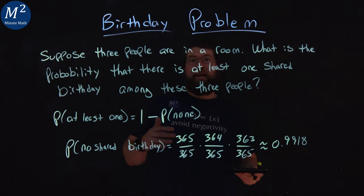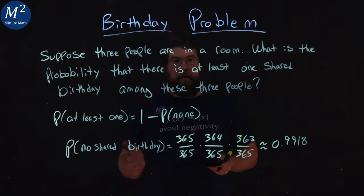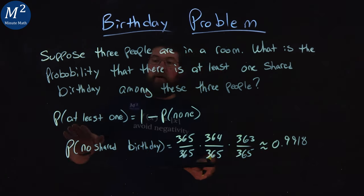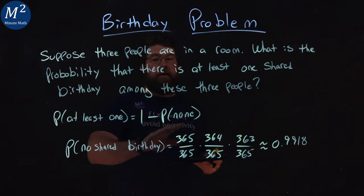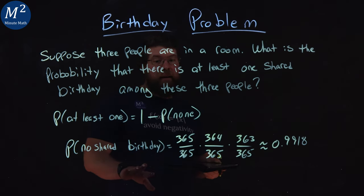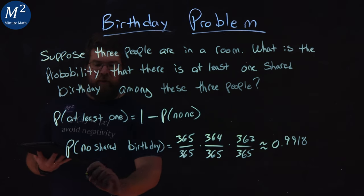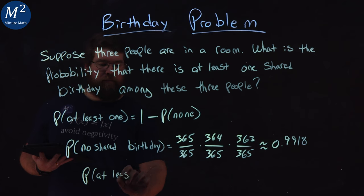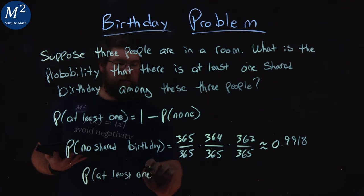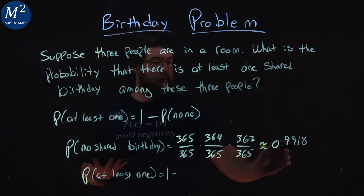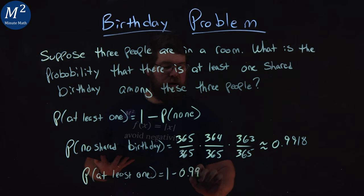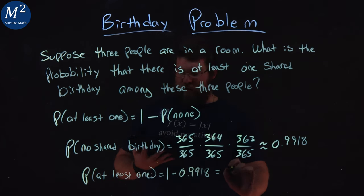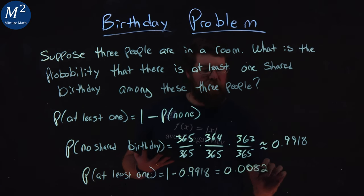But we want to find the probability that they have at least one shared birthday. So like we saw earlier, sometimes calculating the probability of something not happening is easier, the complement of an event, and then do one minus it. So the probability of at least one is one minus this probability of 0.9918, which comes out to be 0.0082.